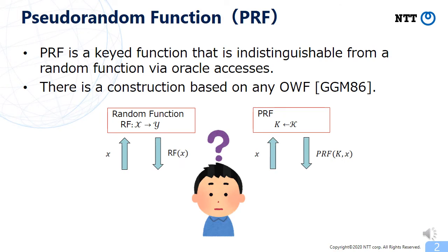Pseudorandom function is a fundamental primitive in cryptography. A PRF is a keyed function that is indistinguishable from a random function if a distinguisher is only given oracle access to the function. As a classical result, it is known that there is a construction of PRF based on any one-way function.